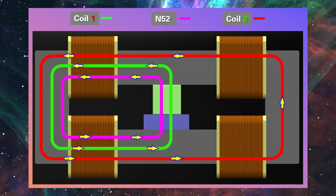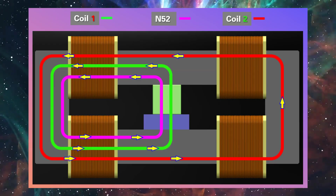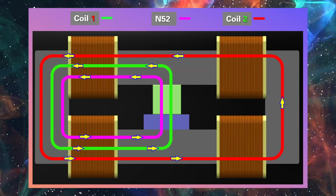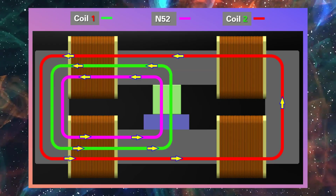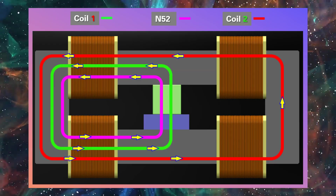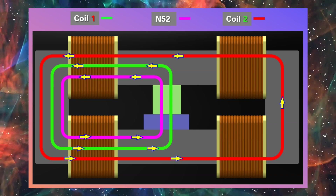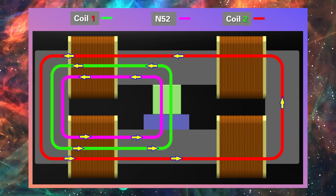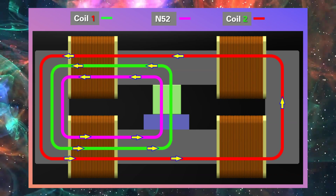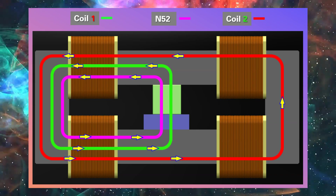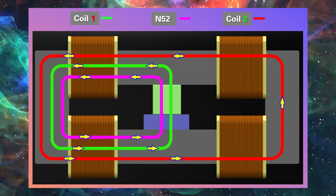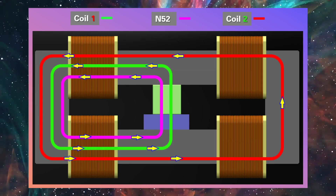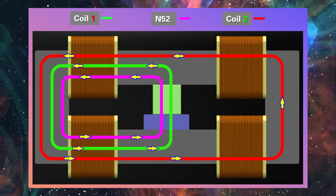This is the magnetic flux flow when the AC 60 Hz current is positive. Magnetic fluxes are characterized by using the shortest distance. Therefore, coil 1's path passes through the magnet at the center. The next picture will help you understand.